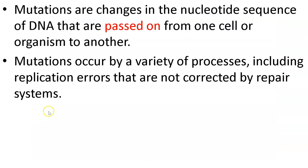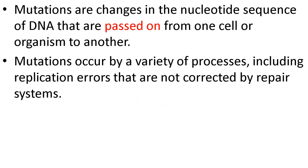So what are mutations? Changes in the nucleotide sequence — your A, T, C, and G nucleotide sequences in DNA — and they're passed on from one cell or organism to another. Mutations occur in a variety of processes, including replication errors, and the ones not corrected by repair mechanisms.